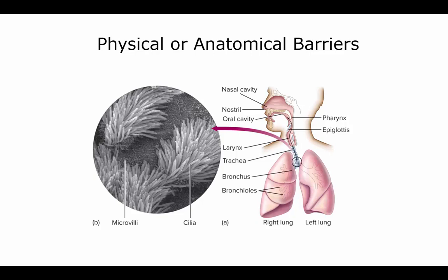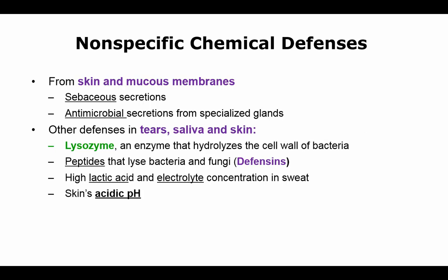You can see the cilia there — they always sweep upward to keep things from getting into the lungs. Moving to chemical defenses from your skin and mucous membranes: sebaceous secretions are antimicrobial, and other glands secrete antimicrobial substances as well. Your sweat glands, your tears, and your saliva all have defenses. In your skin, lysozyme destroys the cell wall of bacteria, and peptides will lyse bacteria and fungi.